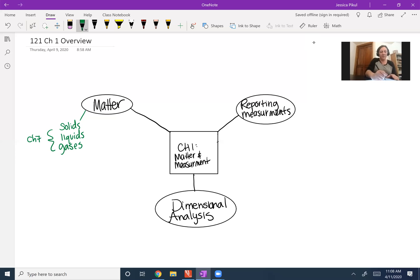And in chapter five, we'll track them with these abbreviations, S for solid, L for liquid, and G for gas.